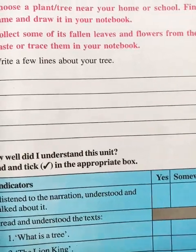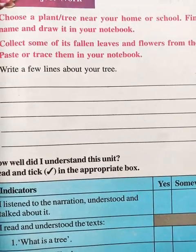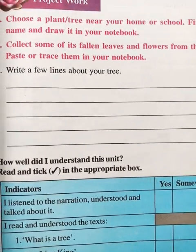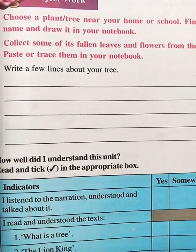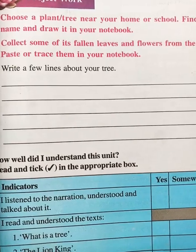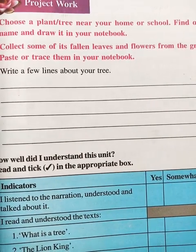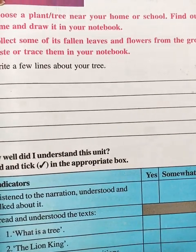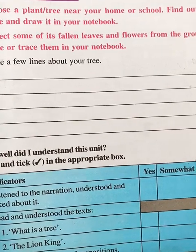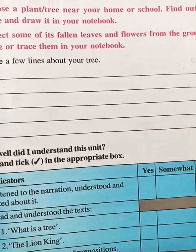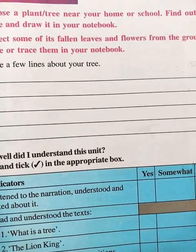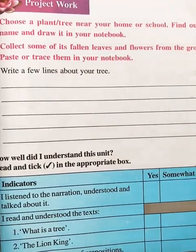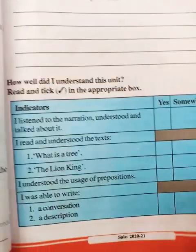For example, if you have drawn a mango tree, write about the mango tree - like 'It is a mango tree, we get mango fruits from it.' Mangoes are a summer fruit, we only get mangoes in summer. Mangoes are also used to make pickles. The leaves are used to decorate doors of houses on festival days. Write a few lines like this about your project work.